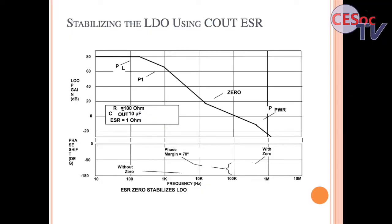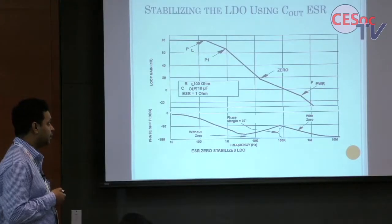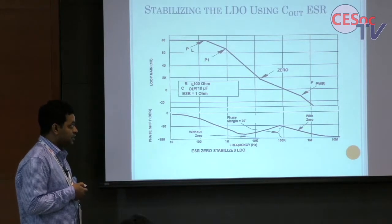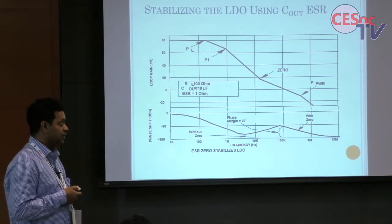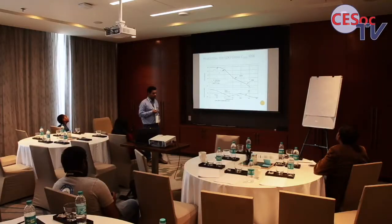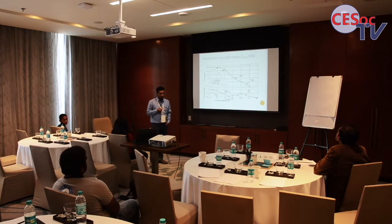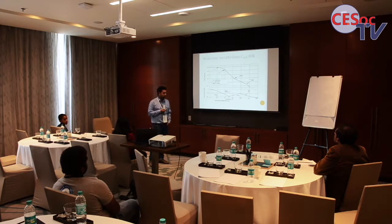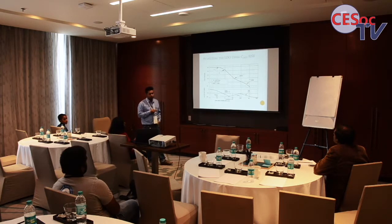This is the Bode plot of a conventional LDO. There is one pole coming from the error amplifier's internal compensation gain-bandwidth product. Then P1 comes from the large capacitor and load resistance. A zero comes from ESR and the capacitor, and a high-frequency pole comes from the bypass capacitors placed across sensitive ICs. Without the zero, phase margin is almost zero and the system can oscillate at the 0 dB crossing — the ESR-introduced zero provides a phase margin of 70 degrees.